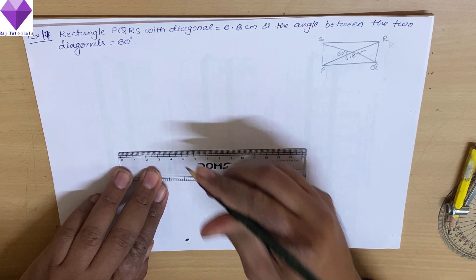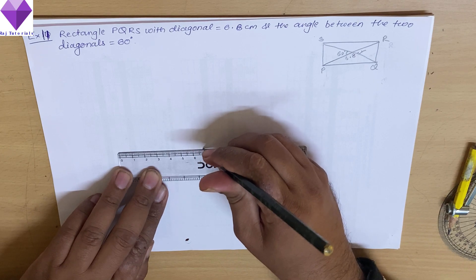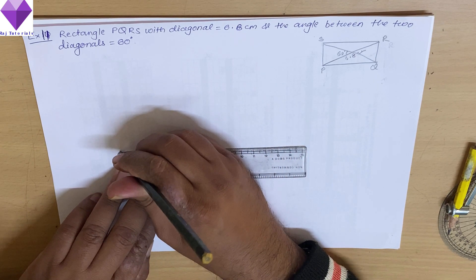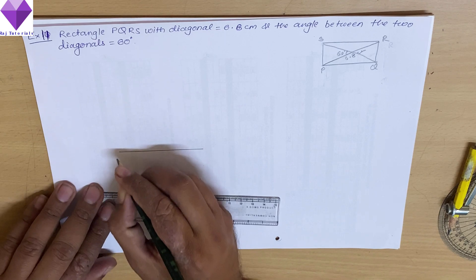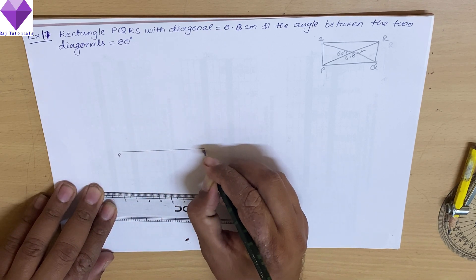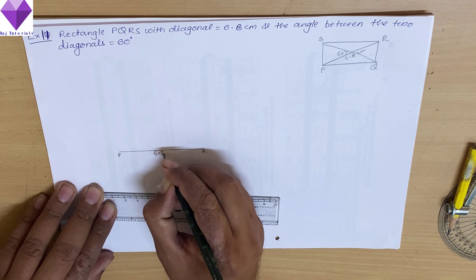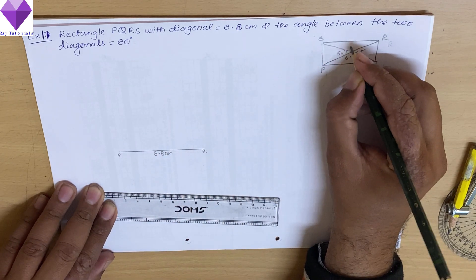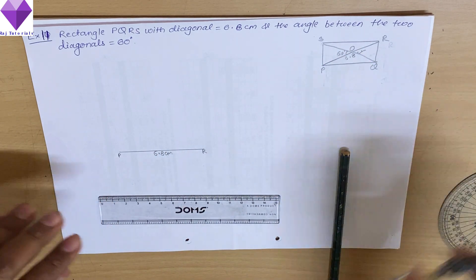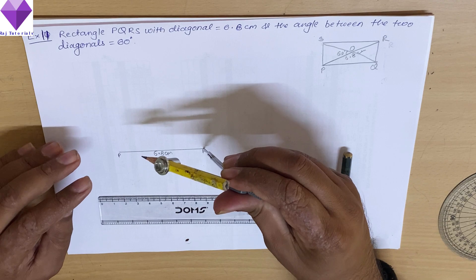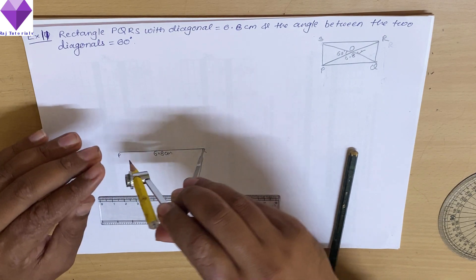drawing in the center of the page, PR equal to 6.8 centimeters. Now I have to bisect this to get the O point. So again using the rounder and taking more than half,